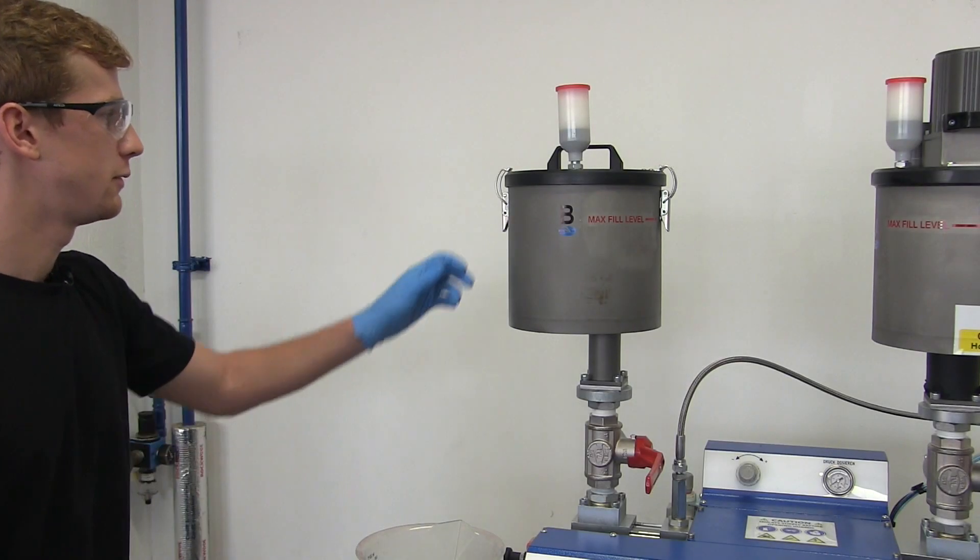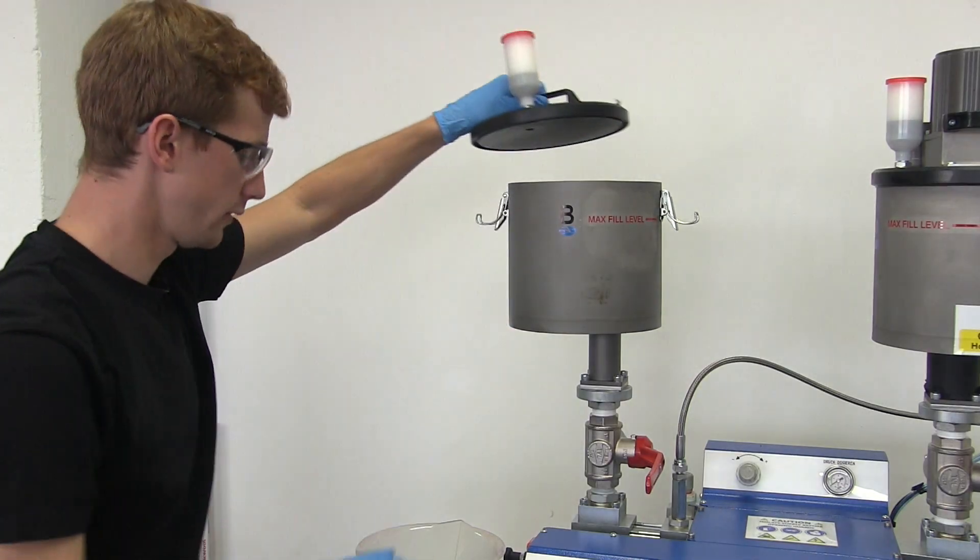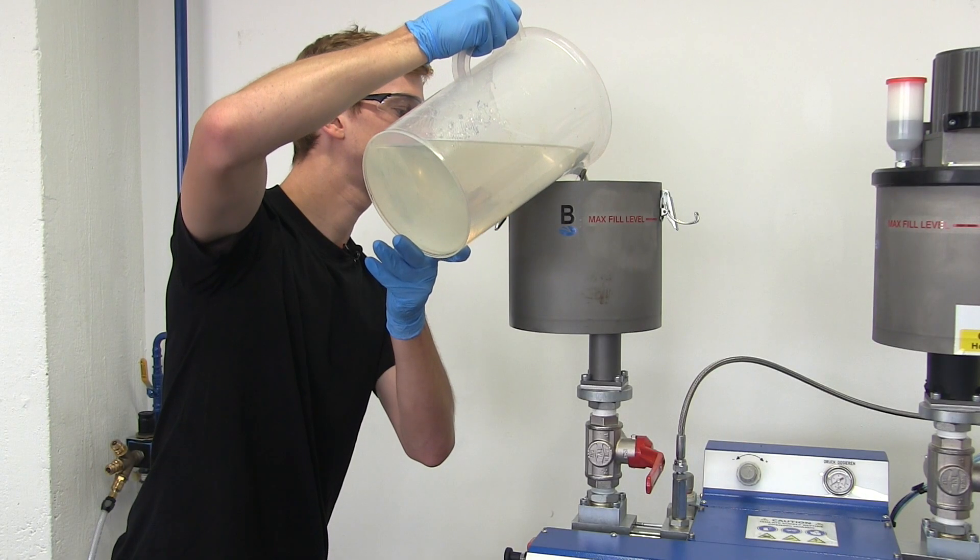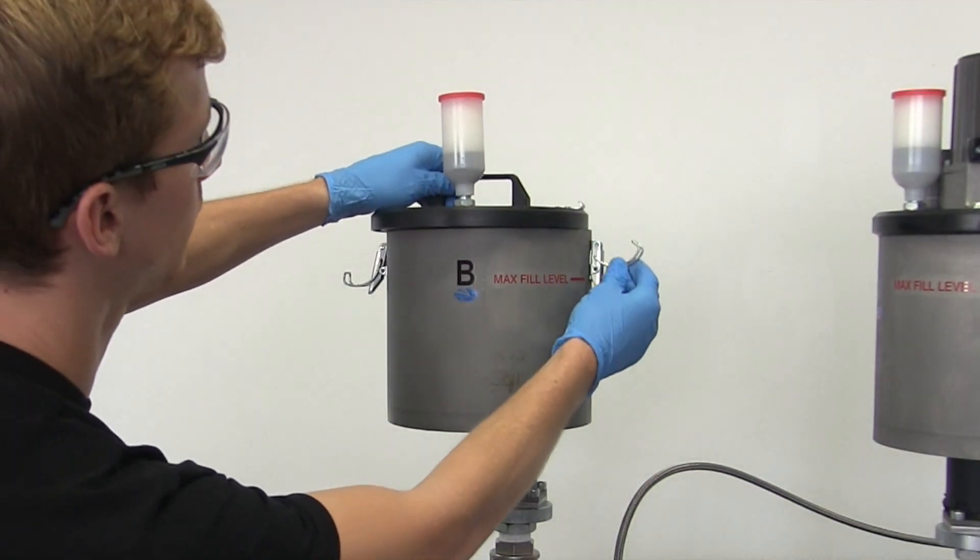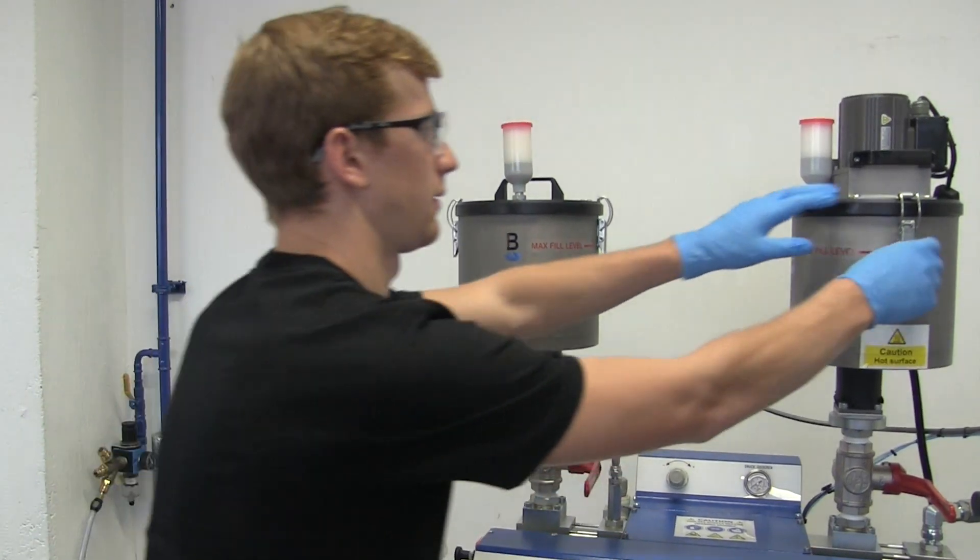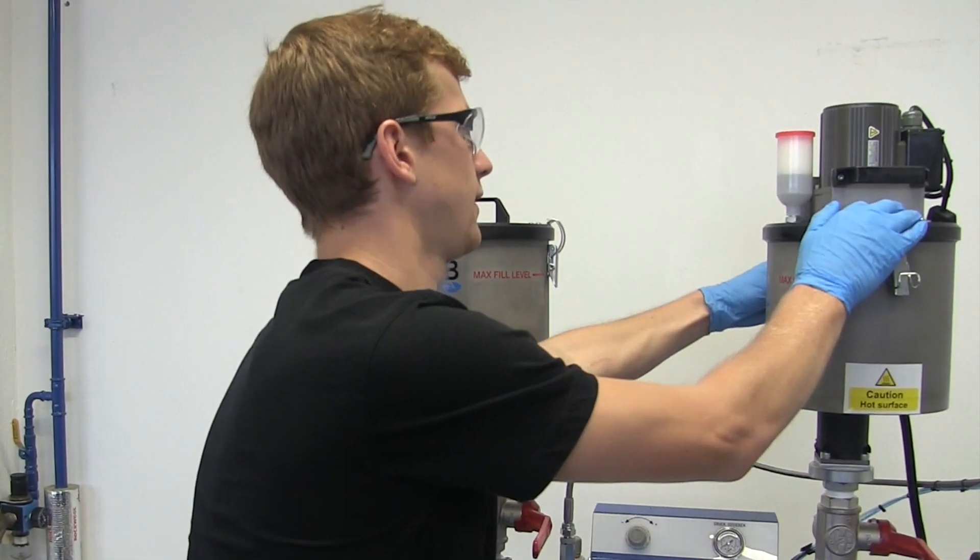The machine can now be filled with material. To do this, simply remove the cover, add the material and put the cover back on. After filling with one component, repeat the same steps for the second component.